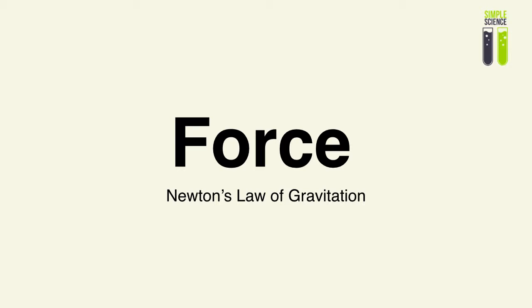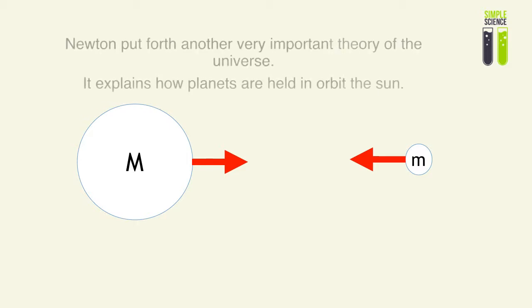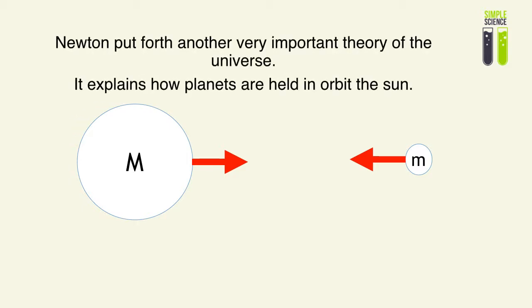A couple of hundred years ago, Isaac Newton postulated the theory of gravity. What he wanted to do was try to find a mathematical function that would be able to link gravity with all mass. Newton basically put forward a very important theory of the universe, mainly to explain the attraction between large objects — planets.